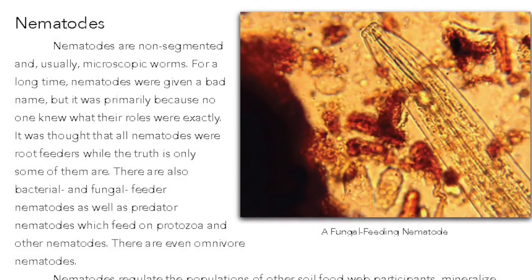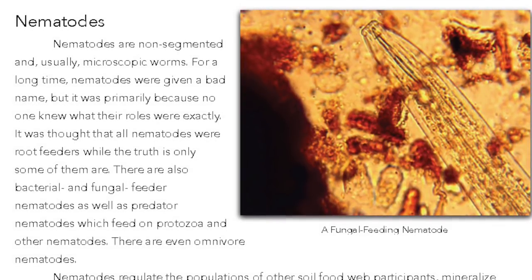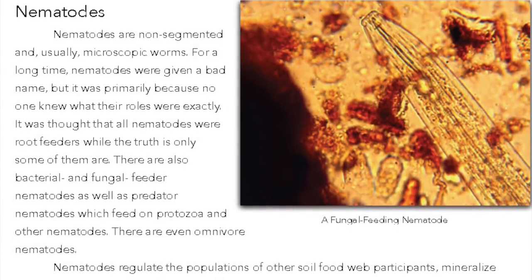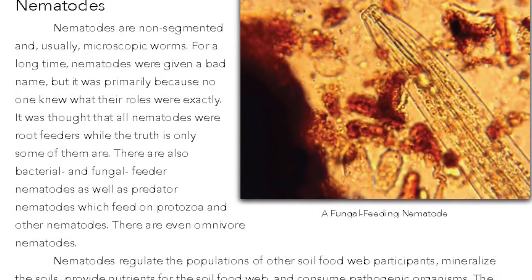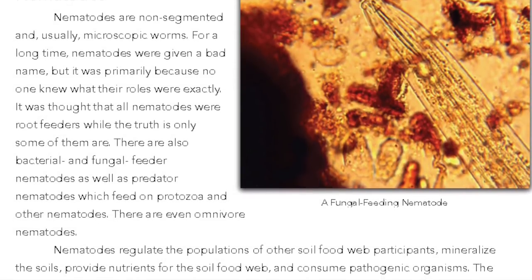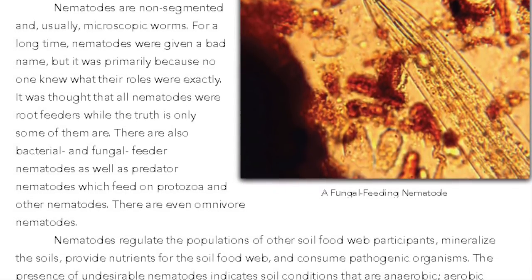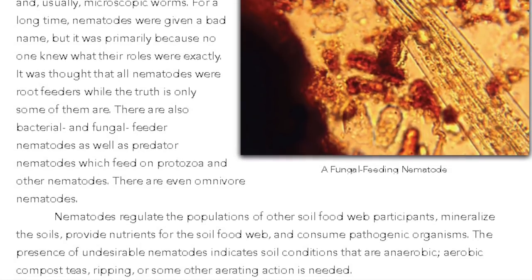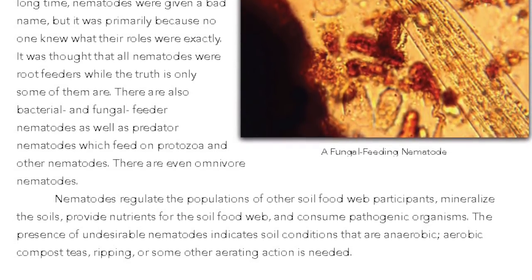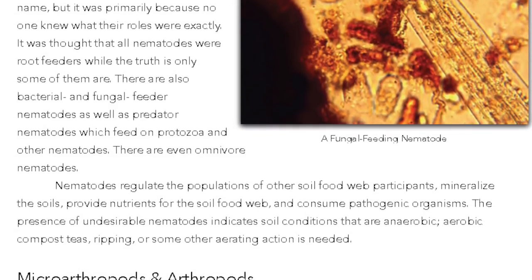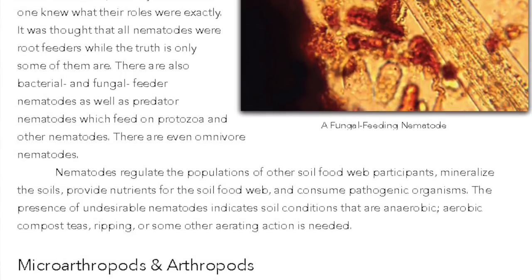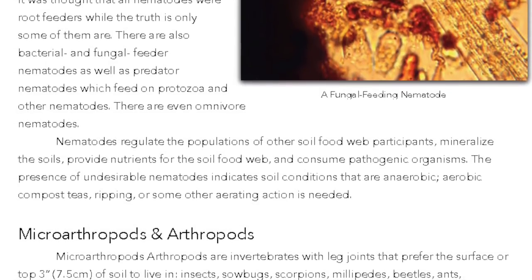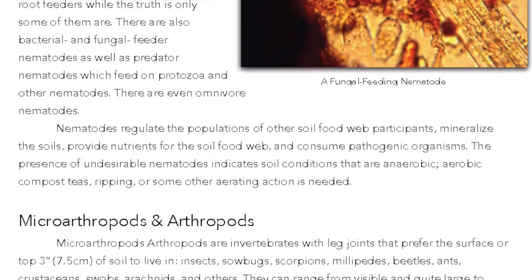Nematodes are non-segmented and usually microscopic worms. For a long time, nematodes were given a bad name, primarily because no one knew exactly what their roles were. It was thought that all nematodes were root feeders, while the truth is only some of them are. There are also bacterial and fungal feeder nematodes, as well as predator nematodes, and even omnivore nematodes. Nematodes regulate the populations of other soil food web participants, mineralize the soils, provide nutrients for the soil food web, and consume pathogenic organisms. The presence of undesirable nematodes indicates soil conditions that are anaerobic — aerobic compost teas, ripping, and some other aerating action is needed.